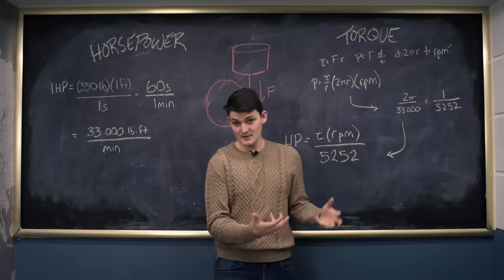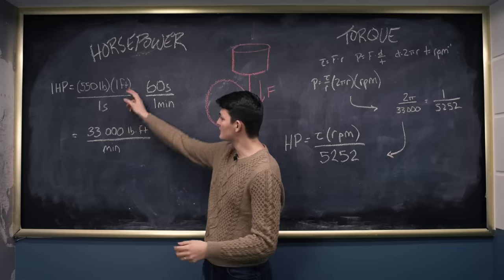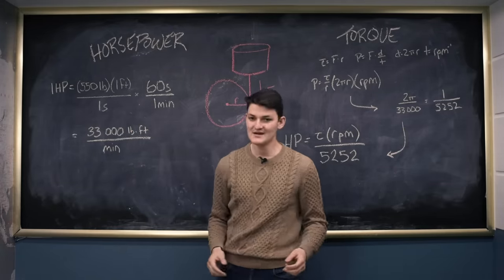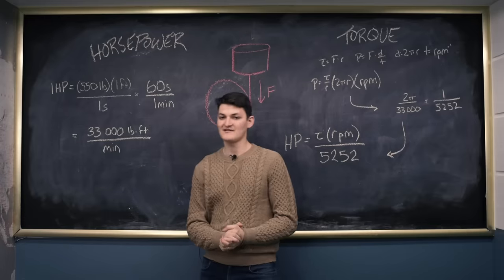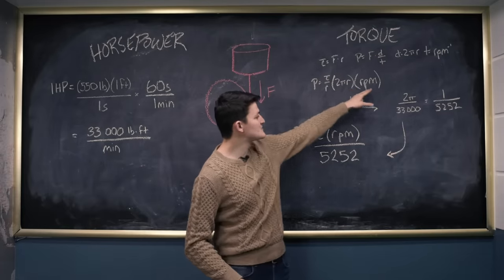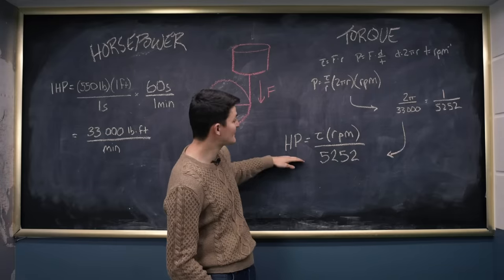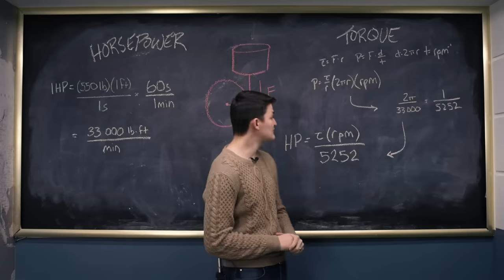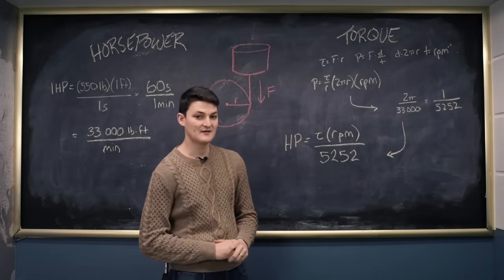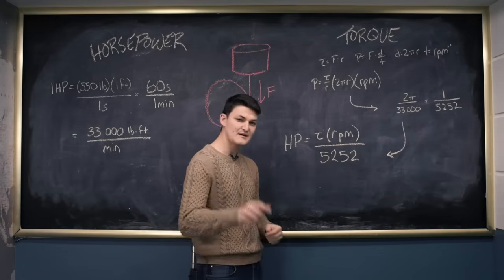And because the imperial system is a pain in the ass, we need to know that once upon a time, somebody's pony could move 550 pounds of coal one foot in one second, or 33,000 pounds a foot in a minute. Kill me. Ridiculous, baseless, underivable units, but I digress. Pound-feet per minute: torque in pound-feet, revolutions per minute. So we can take power divided by 33,000 for however many horsepower. 2π over 33,000 is 1 over 5252, so horsepower is torque times RPM over 5252. In other words, work is only being done by torquing force when it's moving. But you know this.